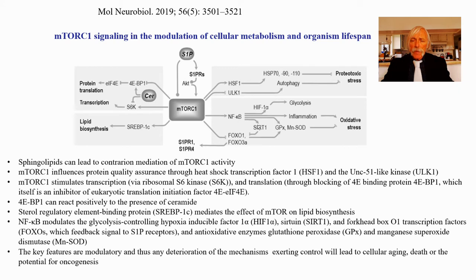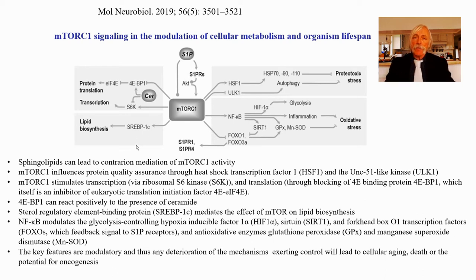NF-κB will also turn on SIRT1, the deacetylase. That deacetylase will block FOXO1. Both FOXO1 and FOXO3A combined would normally work through sphingosine 1-phosphate receptors 1 and 4. So blocking FOXO1 because of SIRT1 is going to prevent the full activation of those receptors, preventing the downstream mediated responses of sphingosine 1-phosphate. This is another part of the rheostatic control, or feedback inhibition long-term.